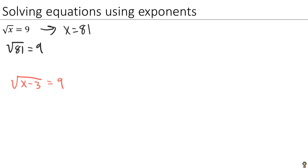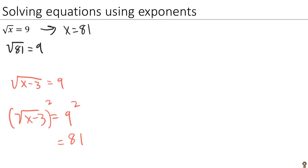In this case, we have a square root, so if we take our equation and square both sides, on the right-hand side 9 squared is 81. On the left-hand side, the square and the square root are opposite operations — they cancel off, and you're just left with x minus 3. Once you have x minus 3 equals 81, you add 3 to both sides and conclude that x is equal to 84.